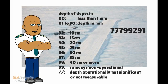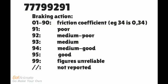The depth is 10 cm in the example. Finally, the last two numbers are used to indicate the braking action. 91 in the example means the braking action on runway 27 right is poor due to the ice.